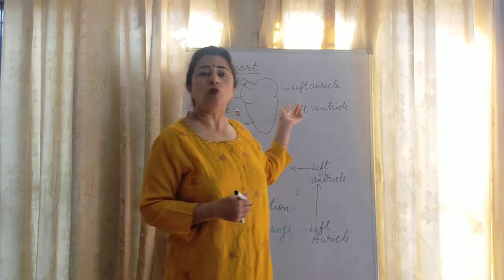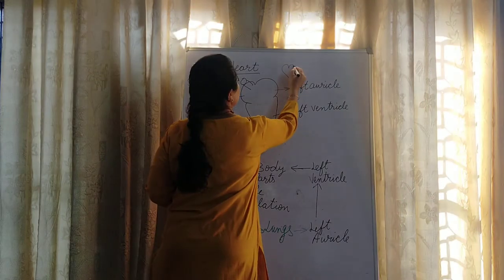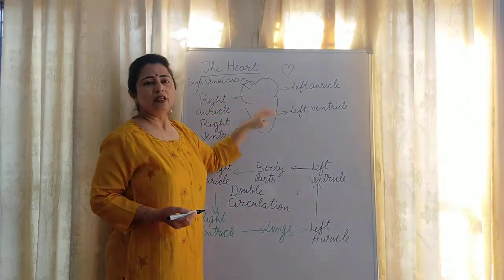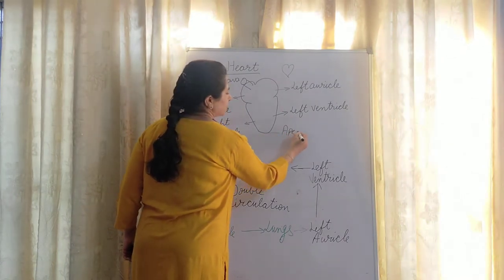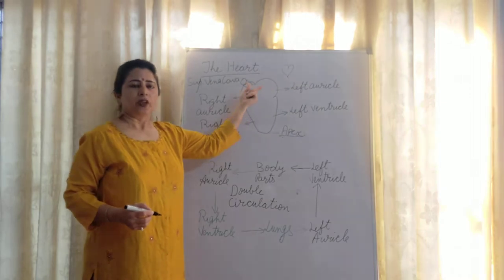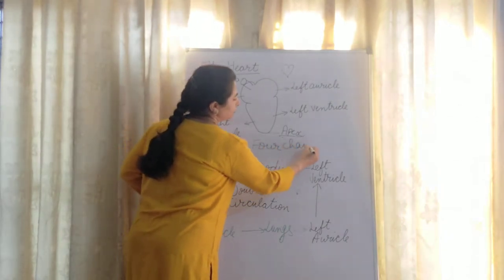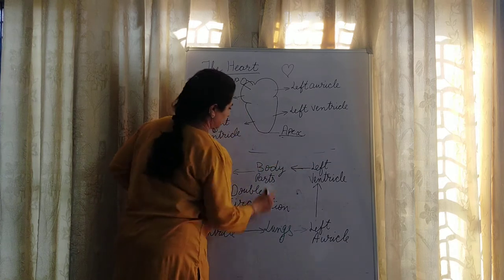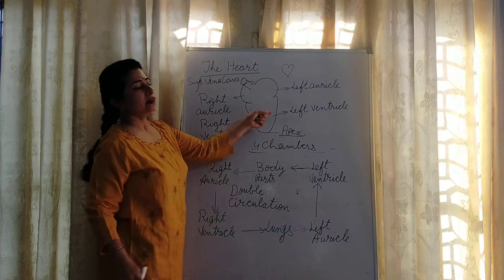Now I am going to tell you about the structure of the heart. If you make a card for your mother, you draw a heart shape — but that is not the proper structure; it is what we draw for convenience. The actual heart is broader at the upper end and becomes narrow at the lower end, and that lower point is called the apex. Our human heart is four-chambered: right auricle, right ventricle, left auricle, and left ventricle.